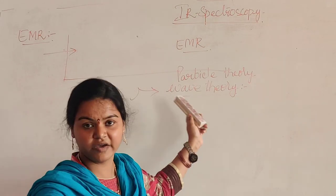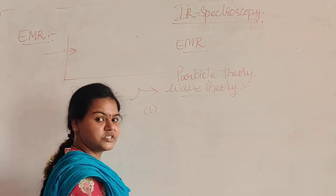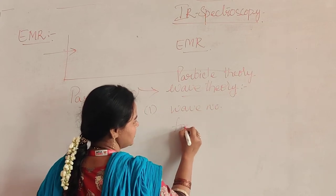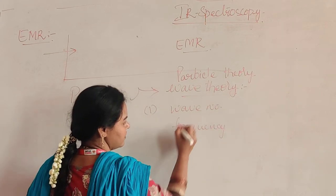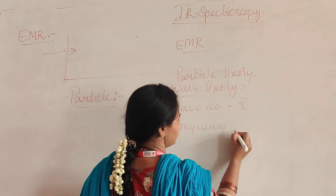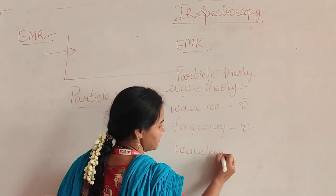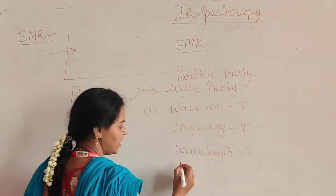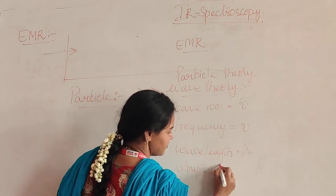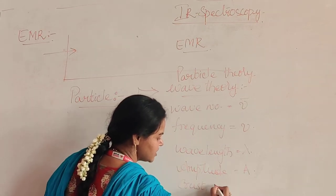In the Wave Nature or Wave Theory, a particle can show different kinds of parametric characteristics like wave number, frequency. Wave number is represented with nu bar, frequency is represented with nu, wavelength is represented with lambda, and another characteristic is amplitude, represented with A. There are also components of crest as well as trough.